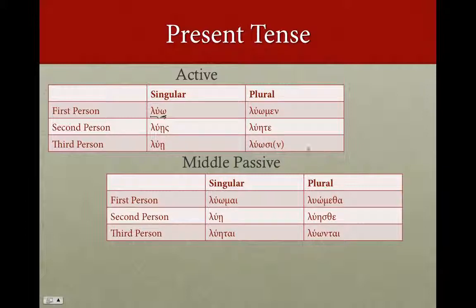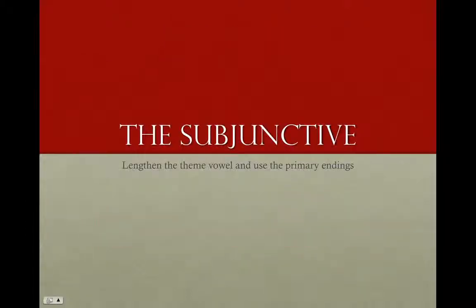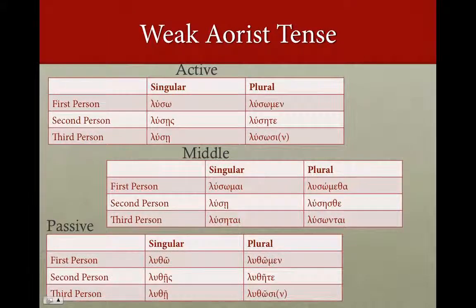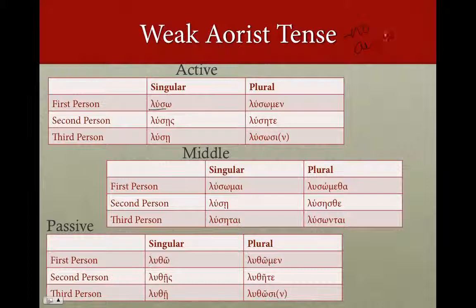The only tenses of the subjunctive are going to be the present, the aorist, and the perfect. We'll just cover the present and the aorist here. So there's your present tense, and in your weak aorist, we're going to take the weak aorist stem minus the epsilon augment — no augment — and just add those same endings.